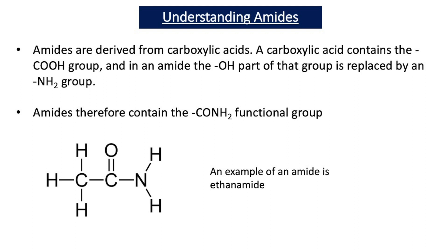Let's start by looking at the structure of amides. Amides are derived from carboxylic acids — a carboxylic acid has a COOH functional group, and in an amide the OH part of this functional group is replaced by an NH2 group, an amino group. Amides therefore contain the C=O NH2 functional group, and an example of an amide is shown here on this slide.